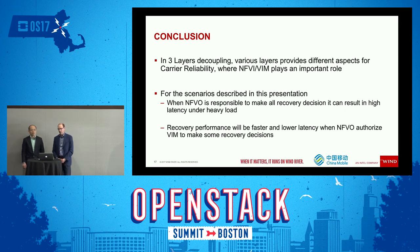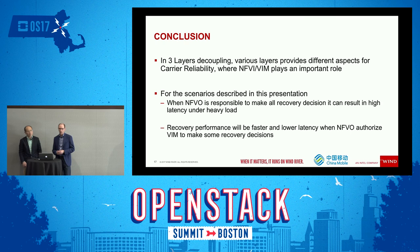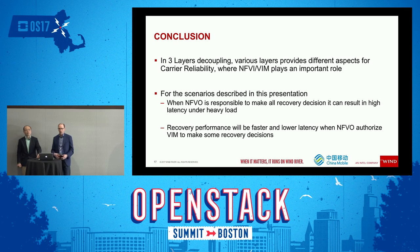My view is that we see this as complementary. For situations where the NFVO needs multi-site awareness and you're describing a service across multiple clouds, the NFVO needs more context. However, for certain services needing faster fault recovery, you want local detection and recovery that is more autonomous. It's really about different levels of reliability and service assurance.